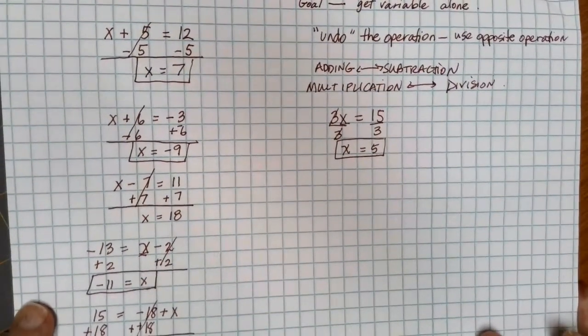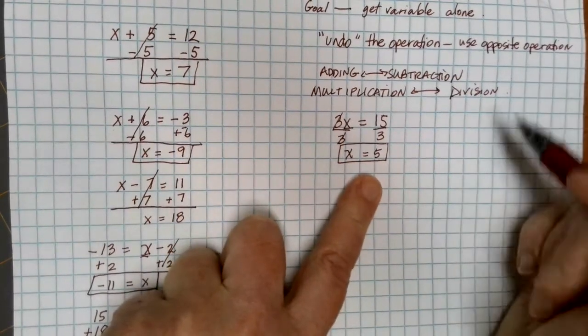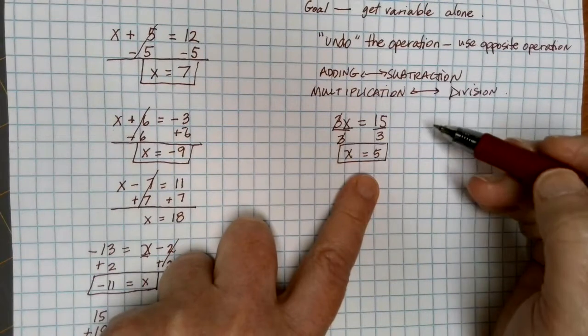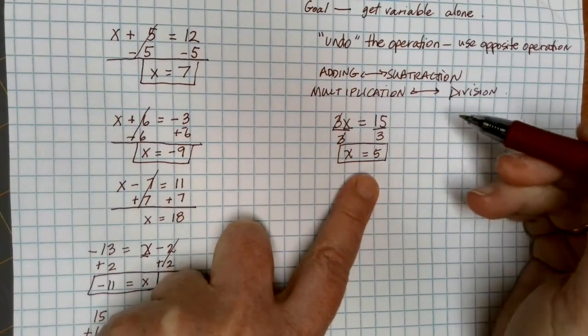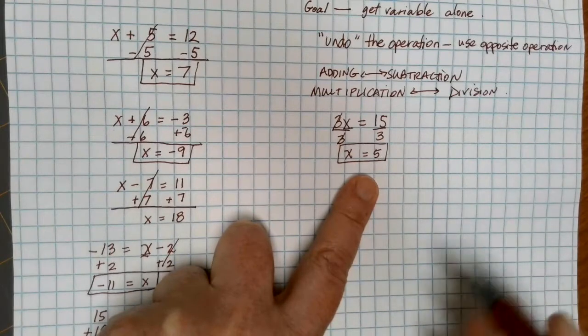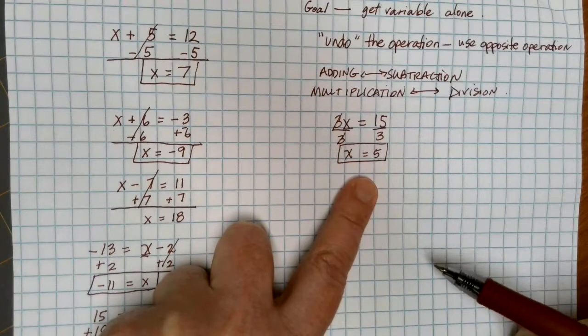I know on some of these problems that you are aware, just looking at the problem, what number would work in that situation. What we're doing here is we're establishing a process and a pattern. Here we're dealing with one-step equations, but we're going to be building to equations where there's lots and lots of steps. And we need a methodical method to go through each of these.